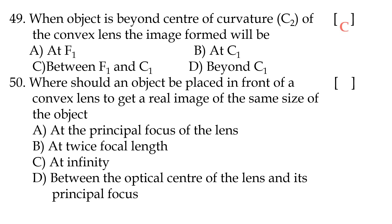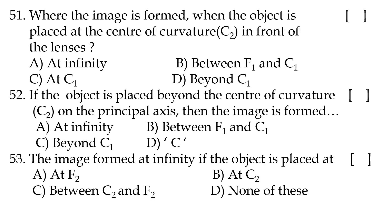Forty-ninth question: when the object is beyond the center of curvature of a convex lens, the image formed will be option C — between F1 (focus) and C1 (center of curvature). Fiftieth question: where should an object be placed in front of a convex lens to get a real image of the same size? Option B, at twice the focal length.